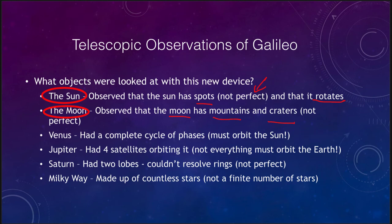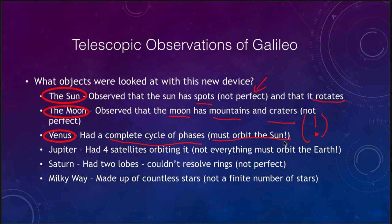He observed Venus, which was a very important observation because he found that Venus has a complete cycle of phases. This is extremely important because it means that Venus must orbit the sun — that is the only way to explain seeing its complete cycle of phases. This one observation threw out Ptolemy's idea of a completely geocentric universe. It did not prove that everything orbited the sun, only that Venus orbited the sun, but it did rule out Ptolemy's model, because Ptolemy's model would predict that Venus was only ever visible as a crescent phase.